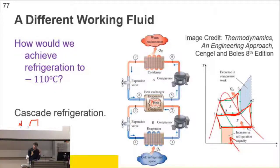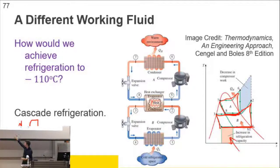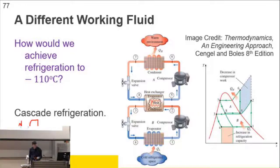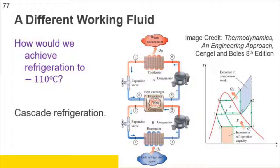Because Q-net equals W-net, the area within is less - you reduce your work. So cascade refrigeration involving different working fluids is a way of getting to very low temperatures.